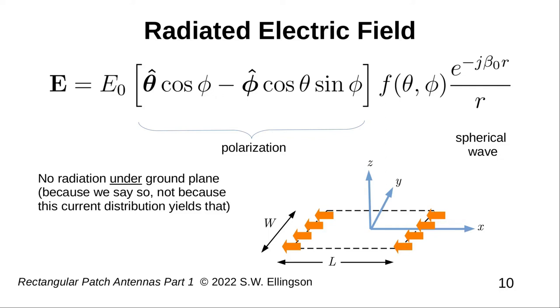Without further ado, here is the expression for the radiation in the far field. We have four factors. E naught is simply a catch-all constant coefficient for everything which does not vary with the coordinates of the field point.